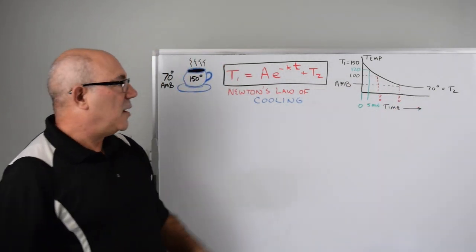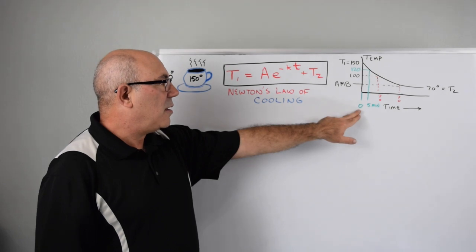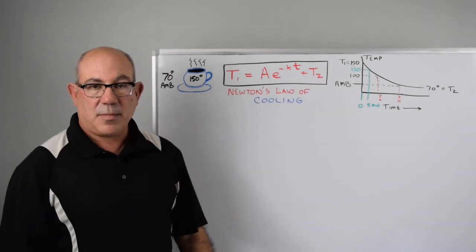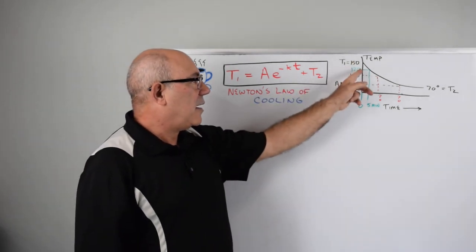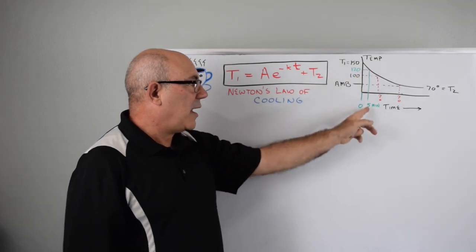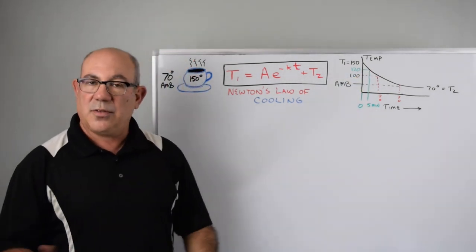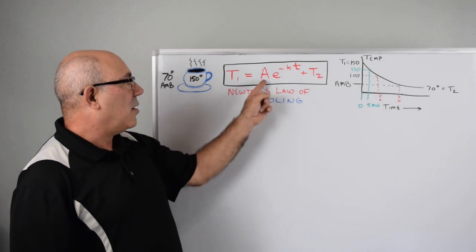We have some information with the problem. We know that at time zero the temperature is 150, and we also know that the temperature is 120 after five minutes. Those will be very important for us to figure out our constants.